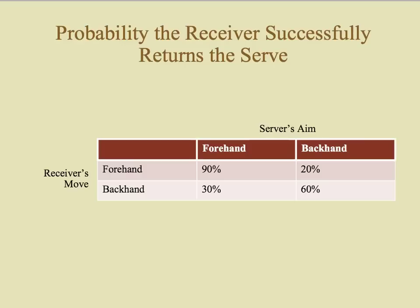Here we have the basic payoffs: the probability that the receiver successfully returns the serve. The server wants to minimize this and the receiver wants to maximize it. If the server aims forehand and the receiver anticipates forehand, the receiver wins 90% of those points. If the server aims forehand but the receiver anticipated backhand, the receiver successfully returns only 30%. If the server aims backhand and the receiver guesses forehand, it's a 20% payoff for the receiver; and if the server aims backhand and the receiver guesses backhand, the receiver gets 60% successful returns.